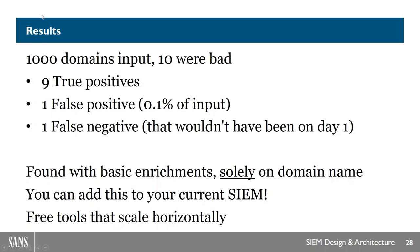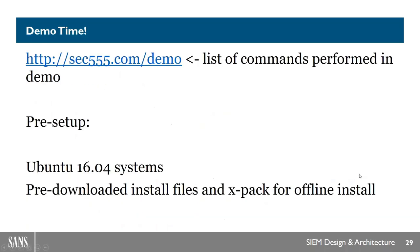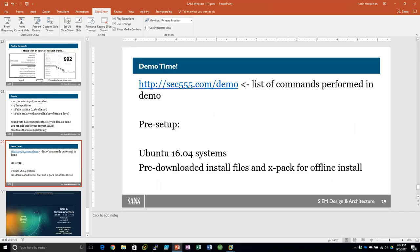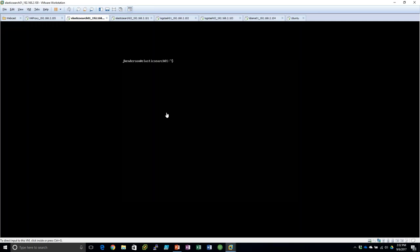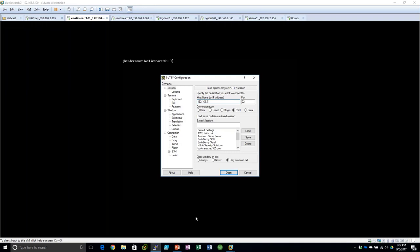Thanks, John. That was awesome. Now on to the cooler stuff, which is my part — demo time. For this, all I have are some pre-built Ubuntu 16.04 systems. I'm going to show you how easy it is to stand up a multi-node Elastic Stack SIM, hopefully as fast as I can. This is kind of like my speed run of setting these up. On these systems, all I have is two files downloaded: the install file for each component — Elasticsearch, Logstash, or Kibana — and the free trial of XPAC to get all the features.